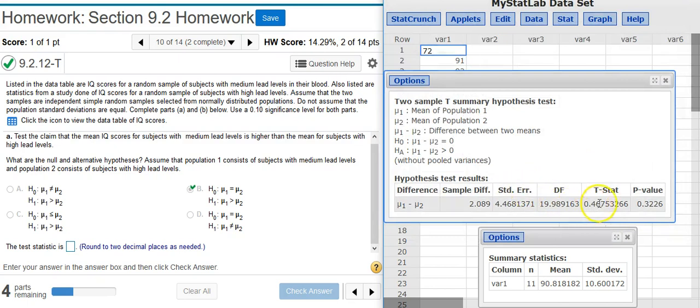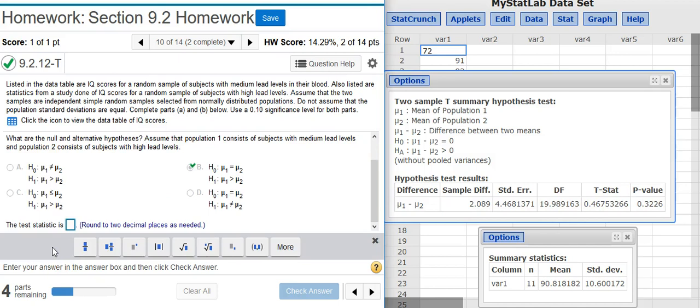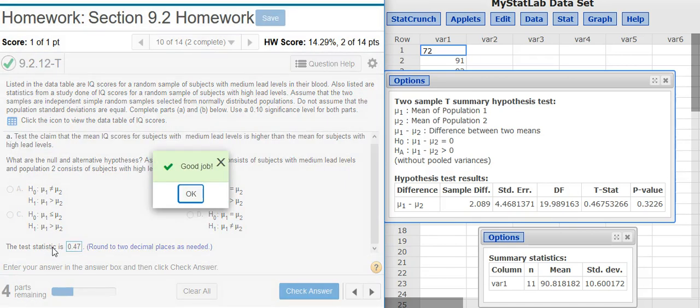And here's my test statistic, second to last number there in my results window. I'm asked to round to two decimal places. Good job.